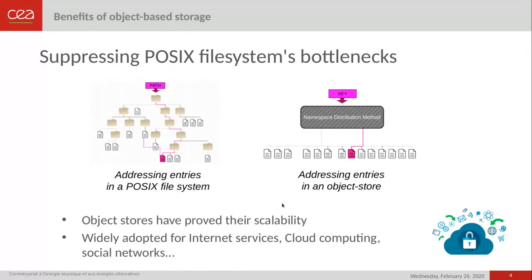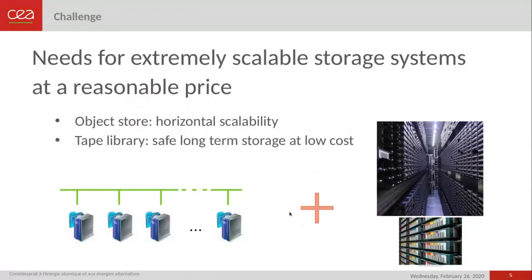To address this challenge, existing object stores appear as a promising solution. With their simple put-get-delete API, they easily deliver good horizontal scalability and are widely adopted for internet services, cloud computing, and social networks. But the design of object stores is often only disk-oriented, deployed to use hard drives, SSDs, or NVMe. Whereas to store exabytes of data, magnetic tape drives and tape libraries remain a good solution, especially for safe long-term storage at low cost.